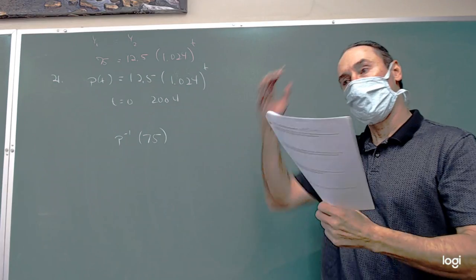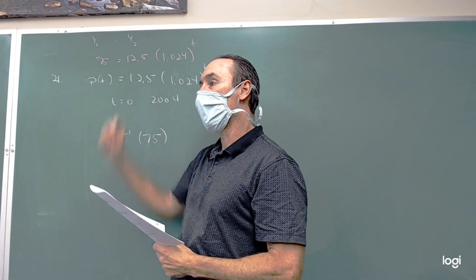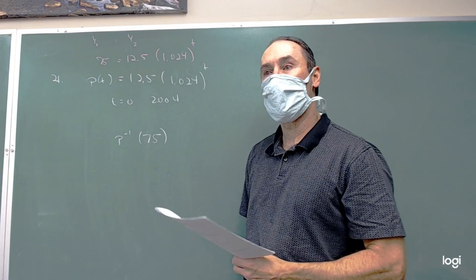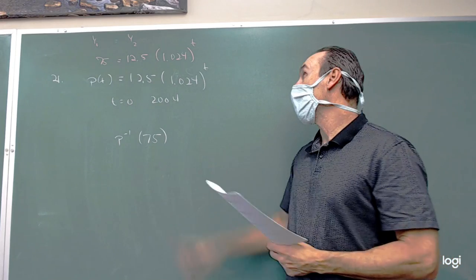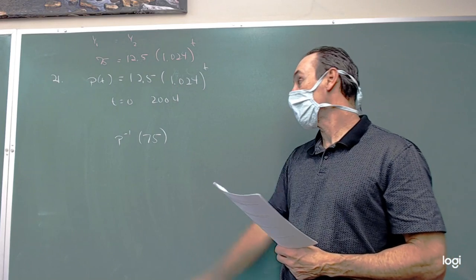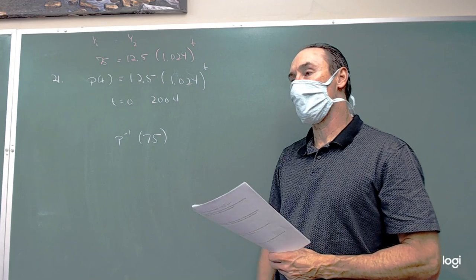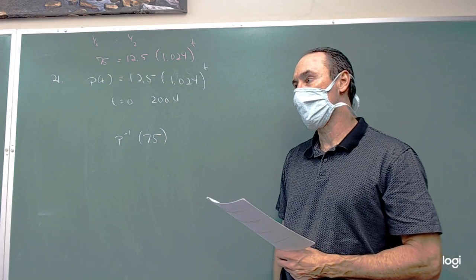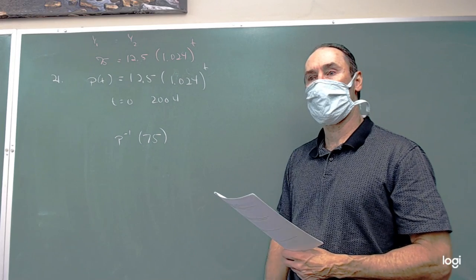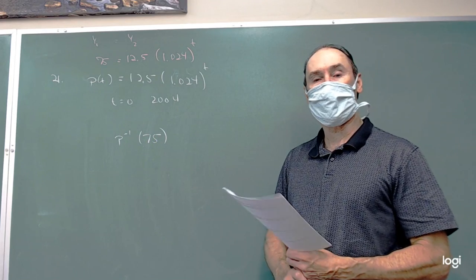You have to play around with your window a little bit. Make sure you've got to get the Y value that's at least 75 so you can see the 75 coming across the screen. Then you're going to have to find that. It may take a little while because a 2.4% interest starting at $12.50, it's going to take a while to reach a price of 75. You may have to extend that X max out there quite a bit.